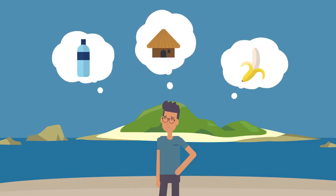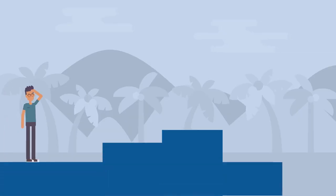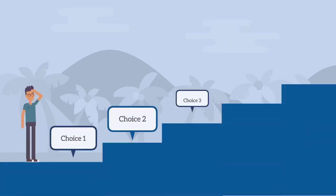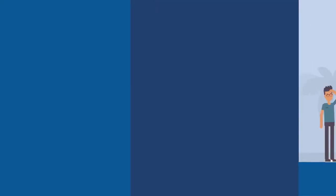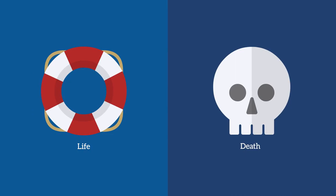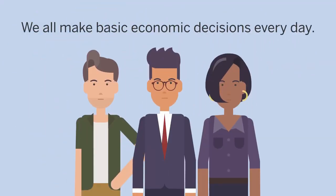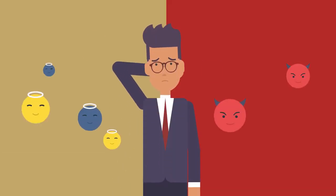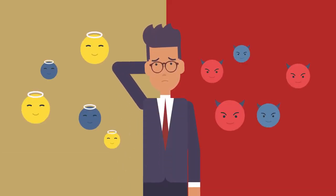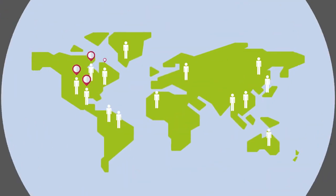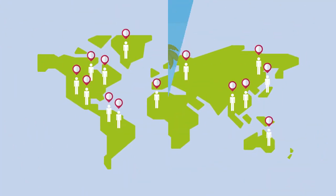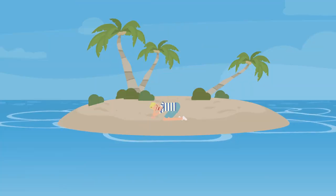Notice that Bob's economic decisions have nothing to do with money. They are simply the choices that he makes facing an uncertain future. Luckily, most of our economic decisions are not matters of life and death, but basic decisions that we all make every day. These decisions all have costs and benefits that must be weighed by the individual, and this is as true for every person anywhere in the world as it is for someone on a deserted island.